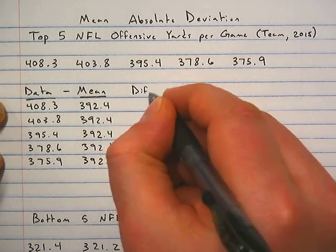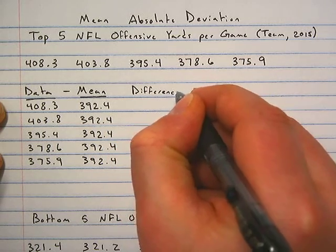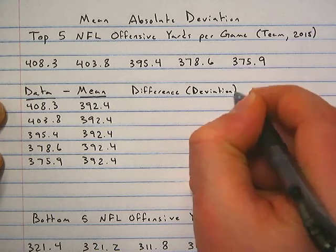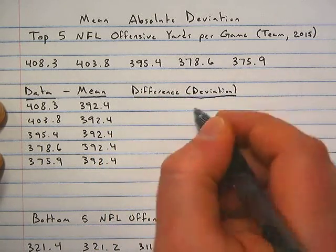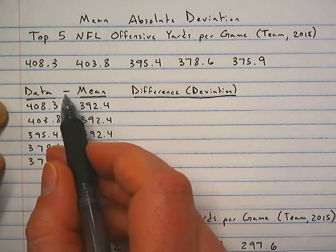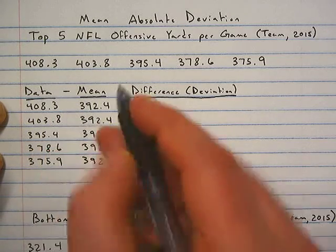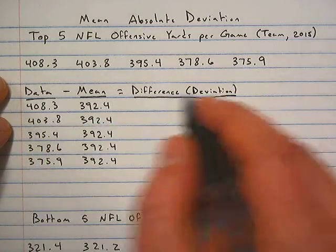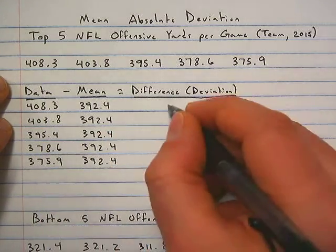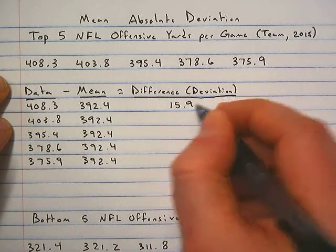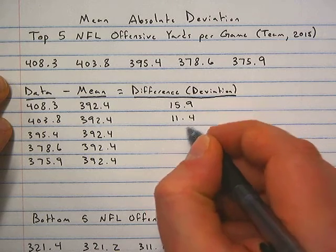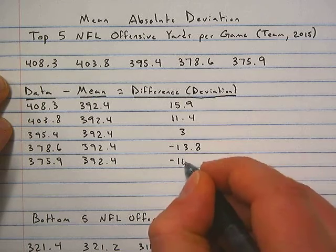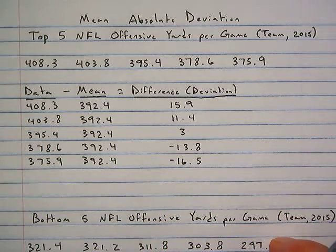The third column we're going to label as 'difference' or the 'deviation.' To calculate this column we're going to find the difference between the data and the mean — that's why I wrote a subtraction sign right there, because data minus mean equals difference. So 408.3 minus 392.4 is 15.9; 403.8 gives 11.4; then negative 13.8, and negative 16.5.